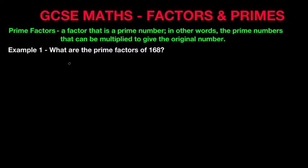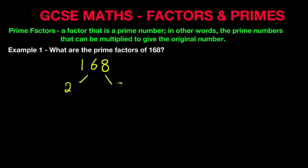If you don't, that's where you could lose marks. Okay, so let's begin. 168. Now the factor tree works like this. Because this number ends in 8, we know that we can divide it by 2. 168 divided by 2 is 84. I'm sure you can work that out in your head.